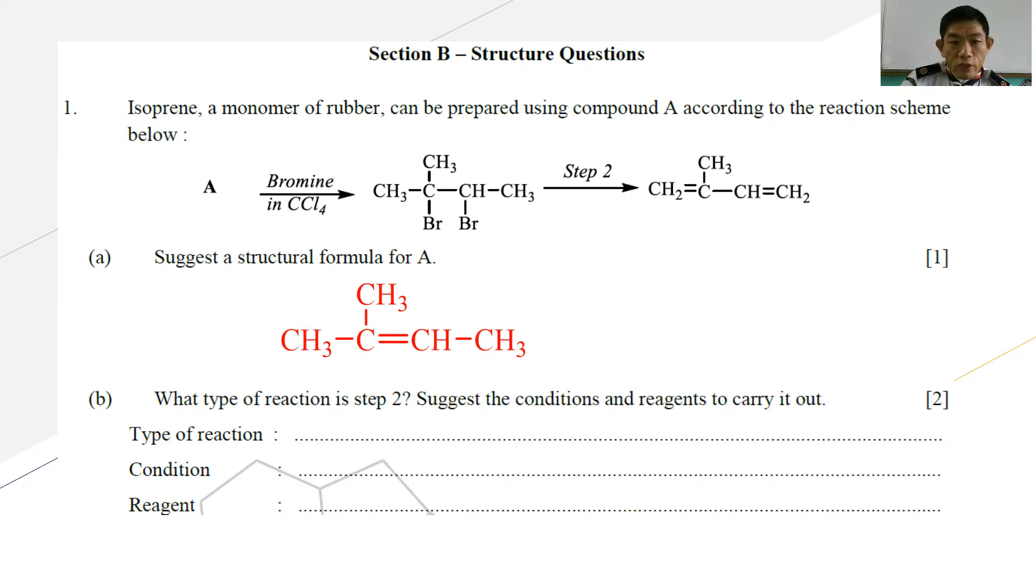Part B: What is the type of reaction in step 2? State the condition and reagent to carry it out. You can see that from CH3-Br, when both Br disappear, this is definitely an elimination reaction. So the type of reaction should be elimination. The condition is ethanolic under reflux. Your reagent is strictly potassium hydroxide. Since they do not state name, if you write the formula, it's also applicable.